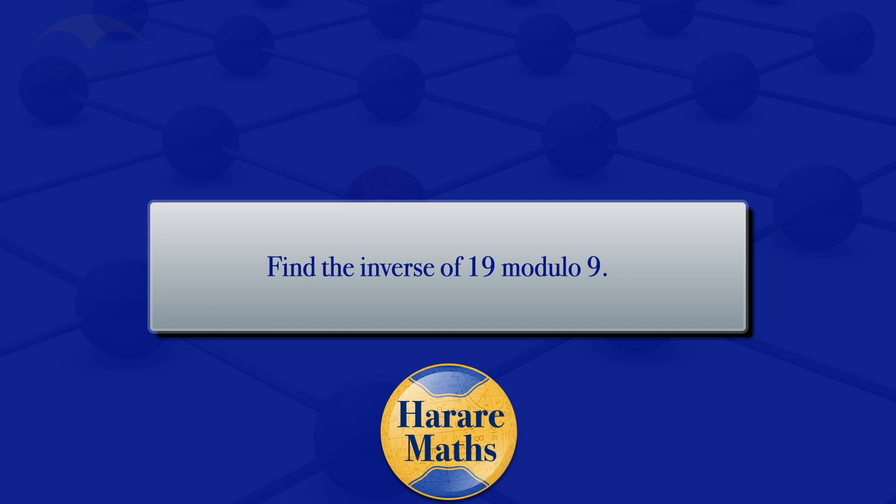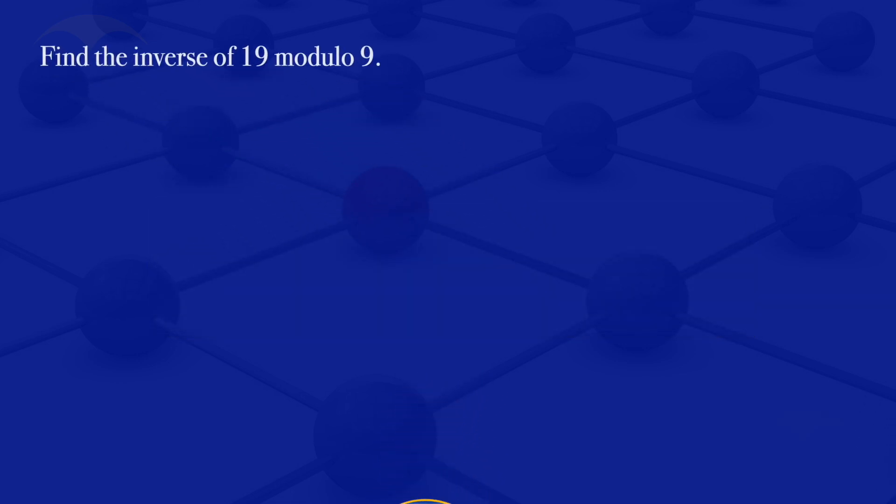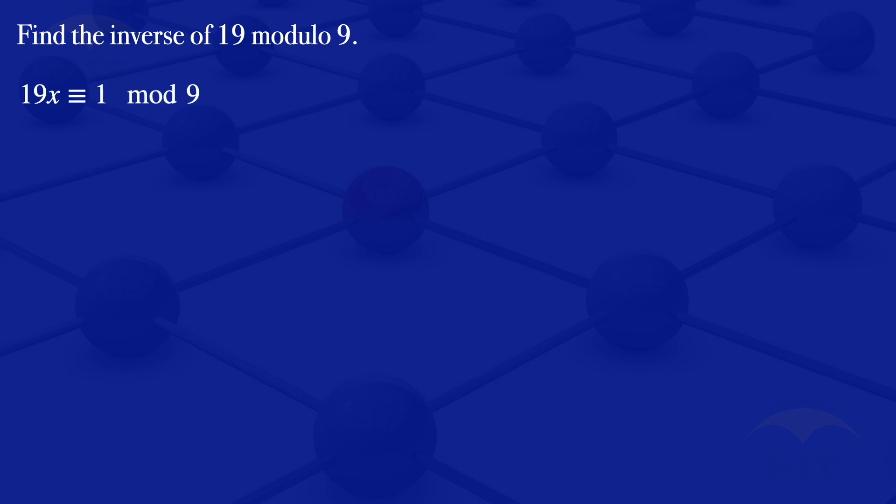In this video, I'm going to find the inverse of 19 modulo 9. So for us to find that inverse, we have to solve the linear congruence 19x congruent to 1 modulo 9.